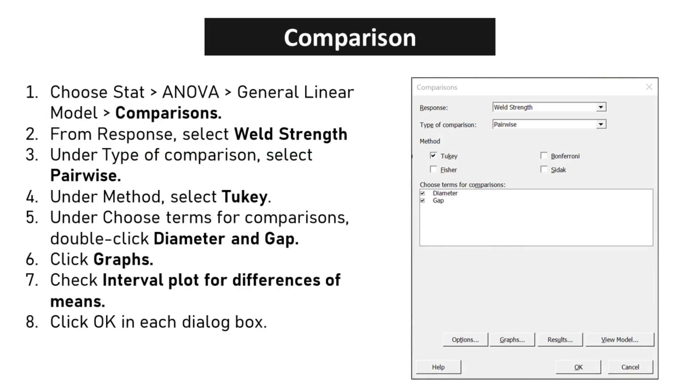Choose STAT, ANOVA, General Linear Model Comparisons. From Response, select Weld Strength. Under Type of Comparison, select Pairwise. Under Method, select Tukey. Under Choose Terms for Comparisons, double-click Diameter and Gap. Click Graphs. Check Interval Plot for Differences of Means. Click OK in each dialog box.